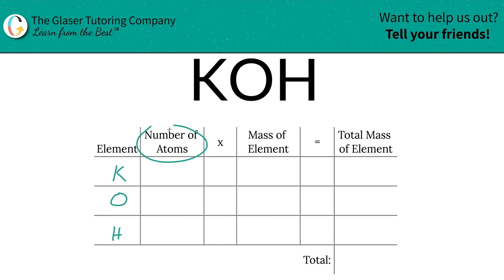Then we write down the number of atoms of each, and that's where the subscripts come into play. Now if you don't see any subscripts, put in a 1, because there is assumed to be one of them. Otherwise, if there was zero of them, well, what the heck would the letter be doing in the compound?